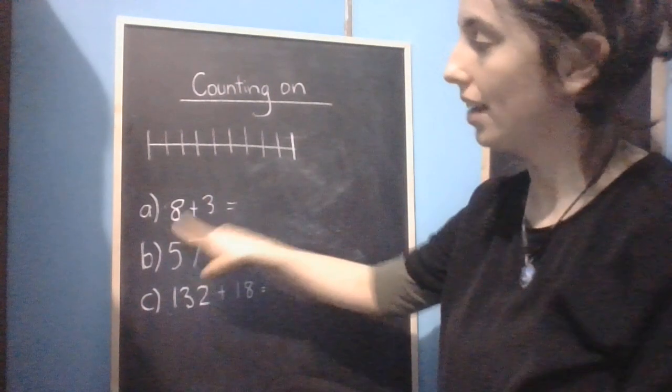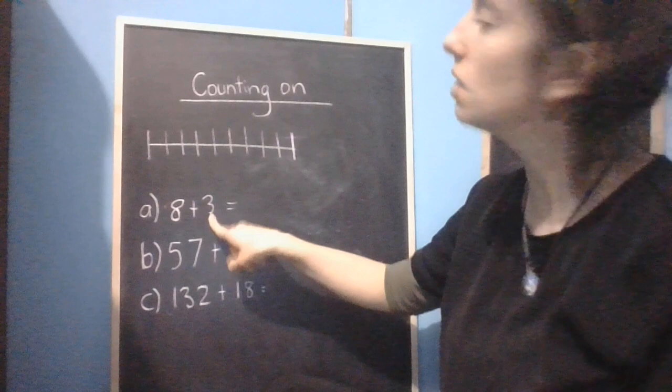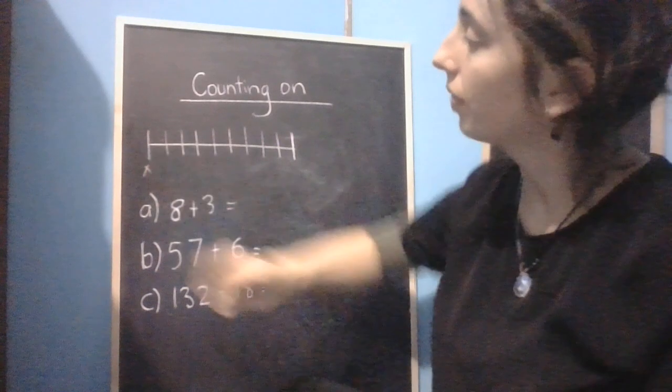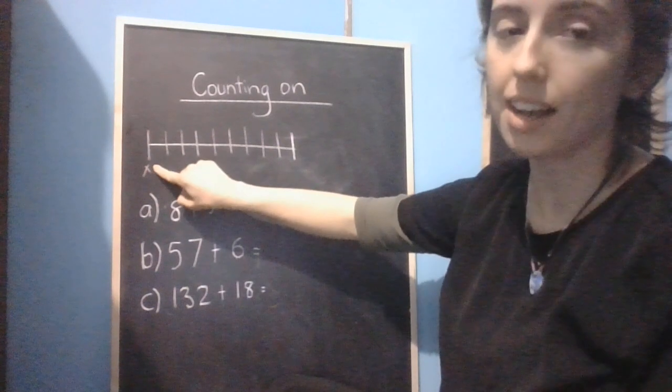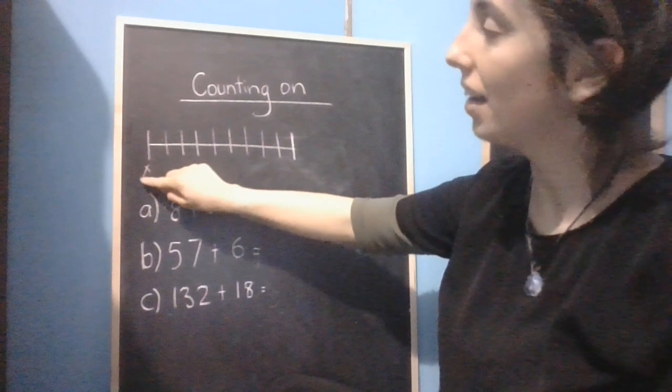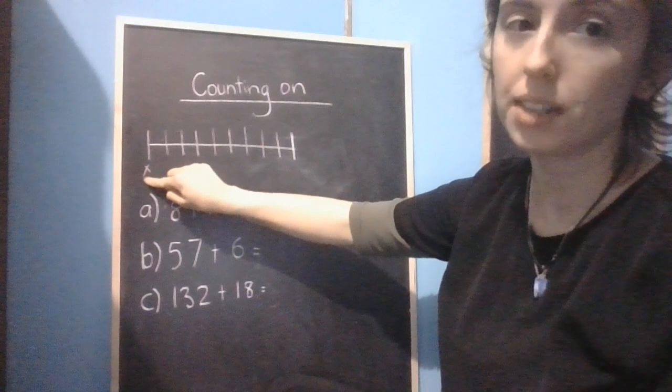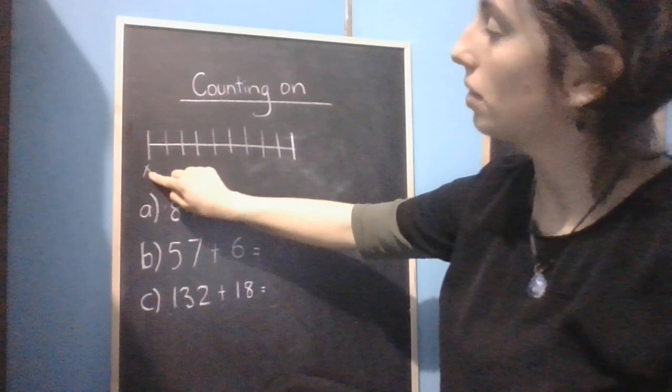So the first one here, 8 plus 3. How it works is you start here right at the start, 8, and then you count on 3. You never count the one that you start on, so we don't count the 8. We start on 8 and then we go 3 more.